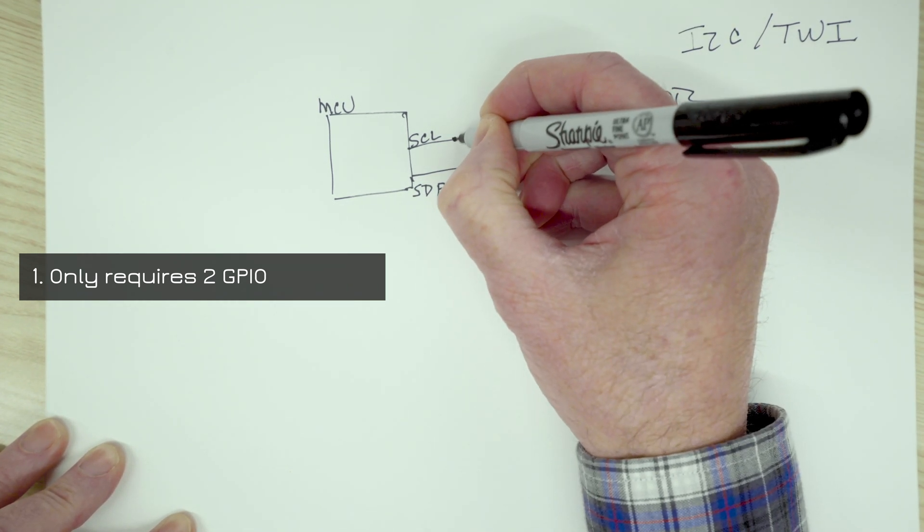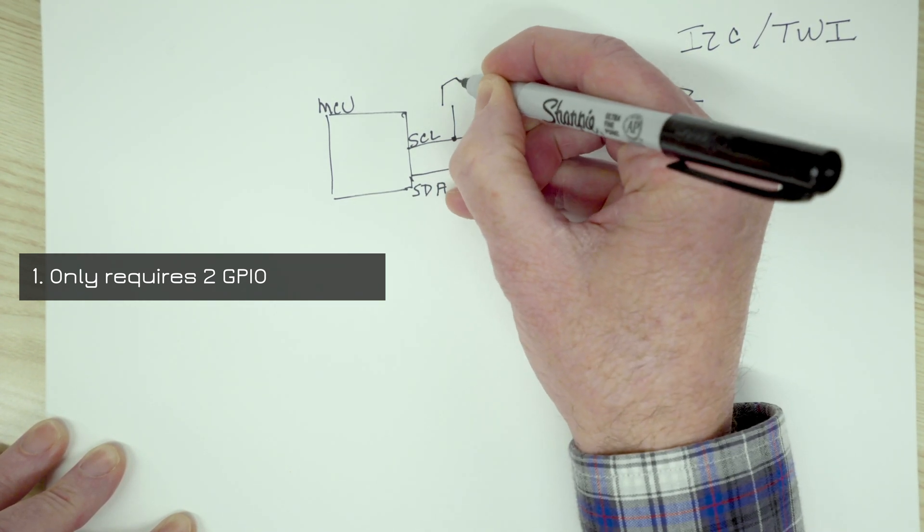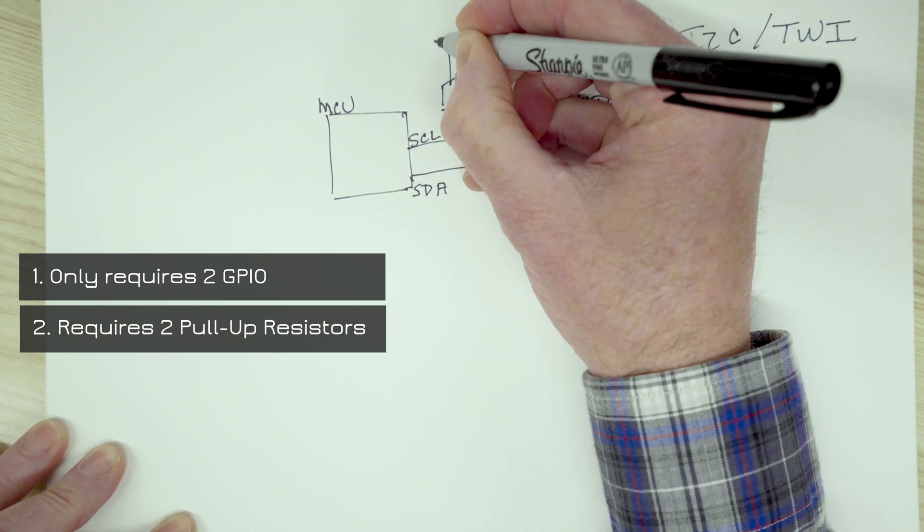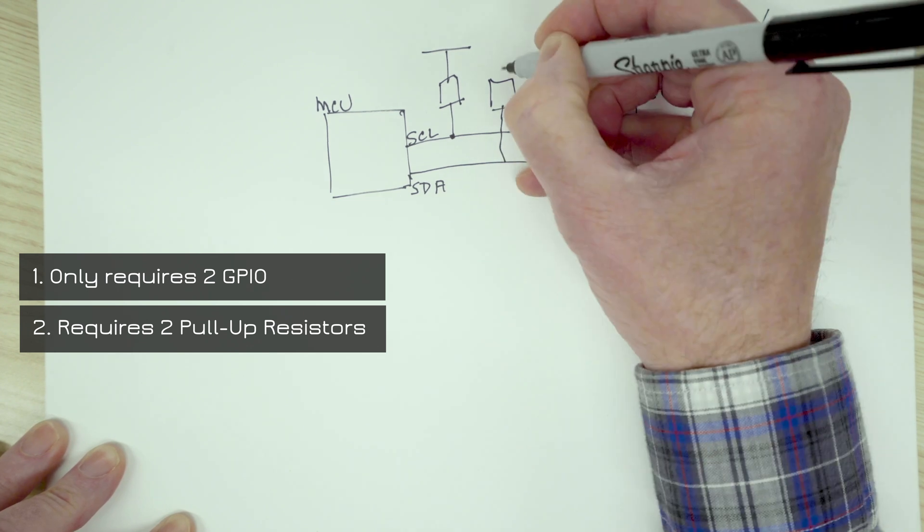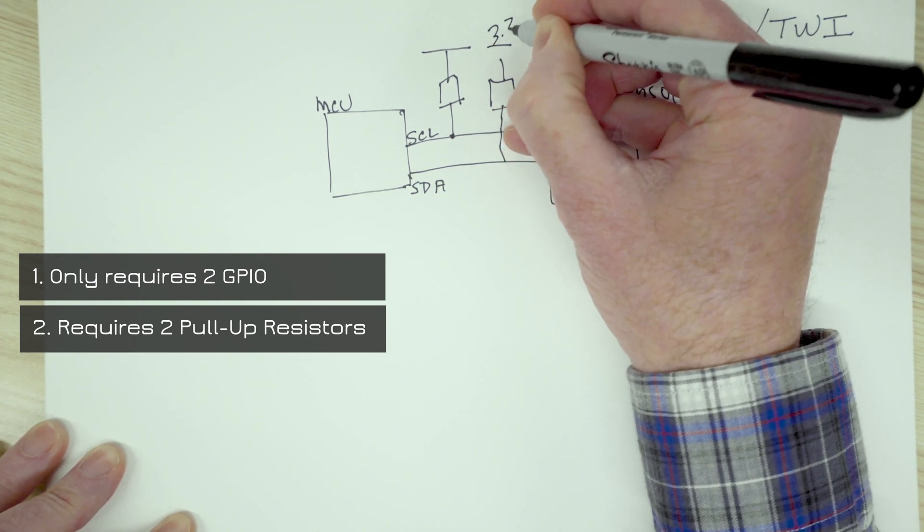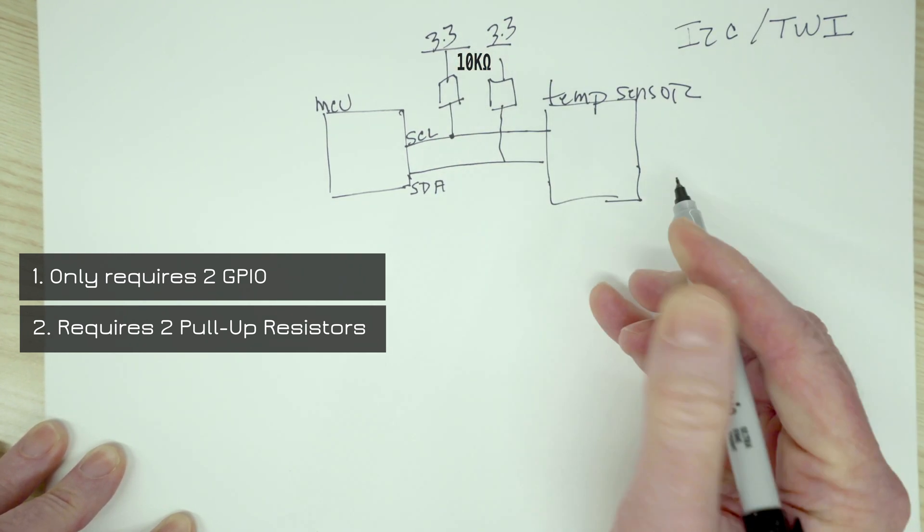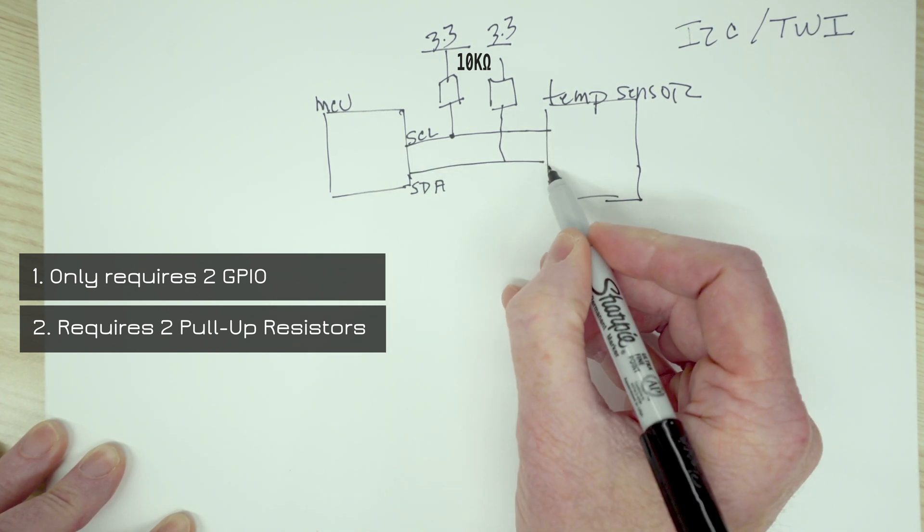Now, the thing to note with I2C, which is rather unique to its communication protocol, is that it does require pull-up resistors. So if I put a couple pull-up resistors here, I'm going to tie them to 3.3 volts. And that's because these lines are normally just floating.